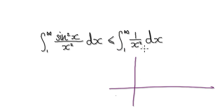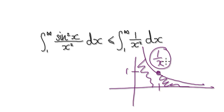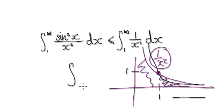Remember, 1 over x looks like this. So with 1 over x, this thing here will diverge, and this thing here will also diverge — you should ingrain this in your mind. But then if you have 1 over x squared, 1 over x squared will look something like this. Then the integral from 1 to infinity of 1 over x squared — it will converge.